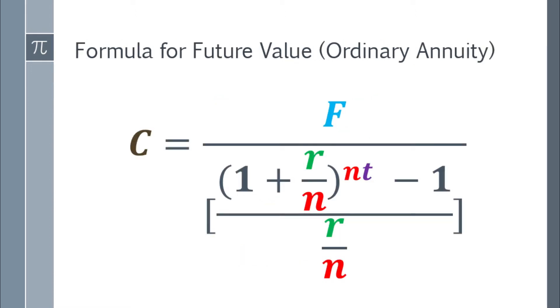What's the formula to find the periodic payment for Future Value Ordinary Annuity? The cash flow or periodic payment, C, is equal to, in the numerator part, the future value F. In the denominator part, we have a complex fraction. The numerator is parentheses 1 plus r over n, with an exponent of n times t, minus 1. The denominator is r over n. You can see on screen the order of operations.